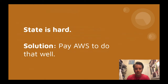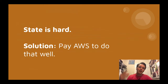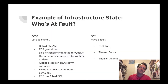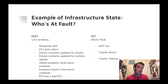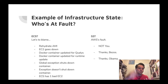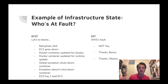State is hard. State is really hard. Programming is hard, and state is one of the hardest things about it. The goal is if you pay AWS to do that well, then a lot of your problems kind of go away. An example of infrastructure state would be who's at fault. Lots to blame would be like AMIs - the operating system you're using. Are you using Red Hat, Ubuntu, Windows? You have to rehydrate those a lot. The more regulated your industry, the more you're forced by federal law to update those things.